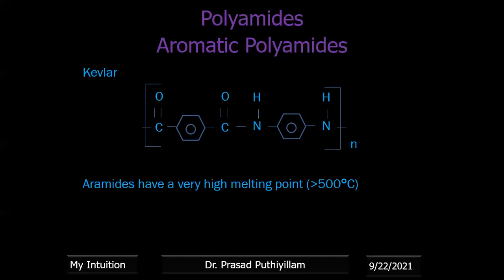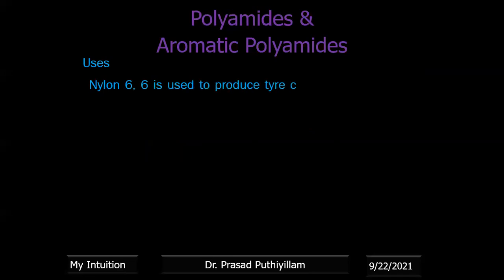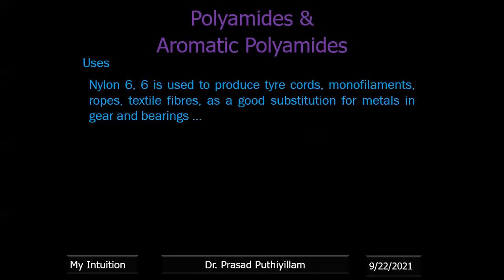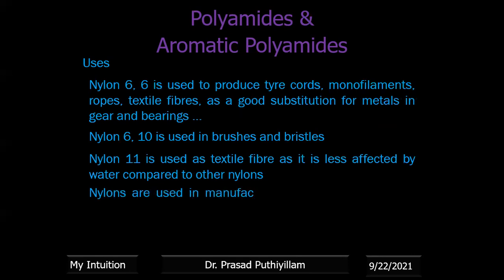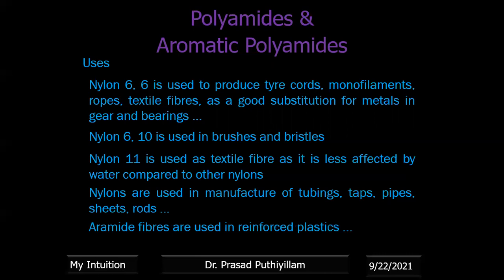Nylon 6-6 is used to produce tire cords, monofilaments, ropes, textile fibers, and as a metal substitute in gears and bearings. Nylon 6-10 is used mainly in brushes and bristles. Nylon 11 is used as a textile fiber as it is less affected by water compared to other nylons. Nylons are also used in the manufacture of tubing, tamps, pipes, sheets, and rods. Aromatic polyamides in the form of thin fibers are used as reinforcing agents in polymer composites.